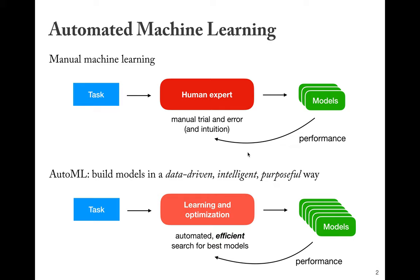So you try something, you see how that works — if it works you try something similar, if it doesn't work you try something different. You keep doing this over and over until you find a model that's good enough. In automated machine learning, we want to replace this tedious trial and error with data-driven intelligent algorithms that will search for the best model in a purposeful way, replacing the human partly with learning optimization algorithms.